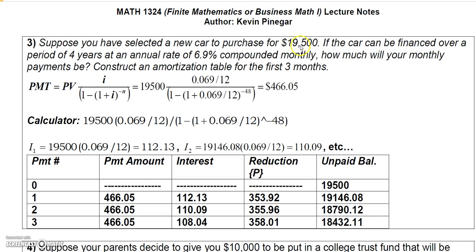Be careful — if you are told you're making a down payment, make sure you subtract that down payment from the amount you're financing. The car can be financed over a period of four years at an annual rate of six point nine percent compounded monthly. We need to find how much the monthly payments will be, and then construct an amortization table for the first three months.